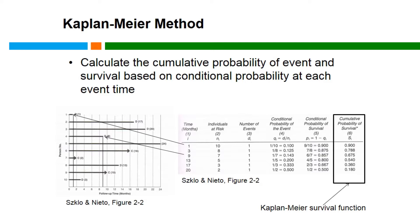Moving to 9 months of follow-up, there are 7 individuals remaining under observation — individuals 10 and 1 have died and individual 7 was lost to follow-up. We observe another death at month 9, so the conditional probability of the event was 1 over 7, or 0.143. The conditional probability of survival is 1 minus 0.143, or 0.857. The cumulative probability of survival is the product of the conditional probabilities of survival up to this point: 0.9 times 0.875 times 0.857, which equals 0.675.